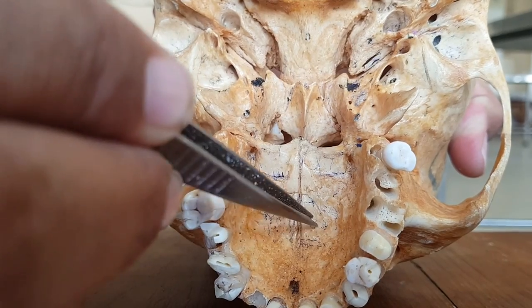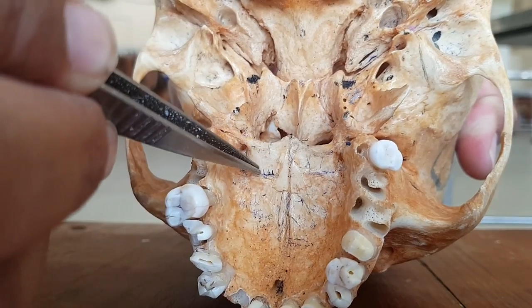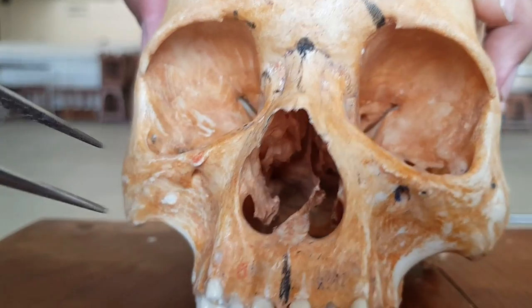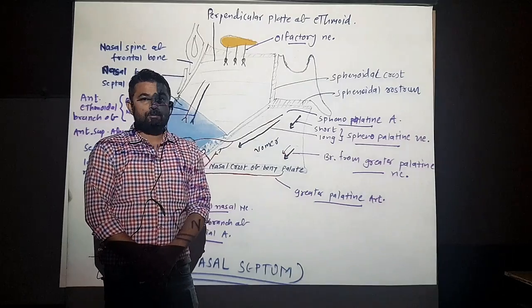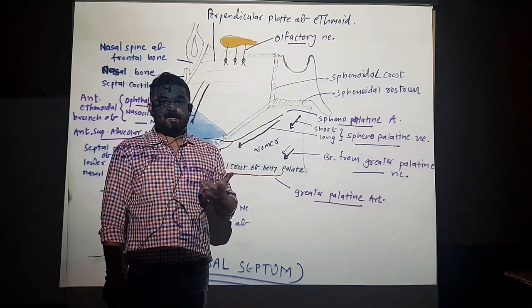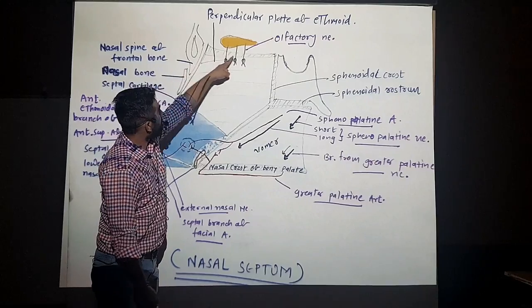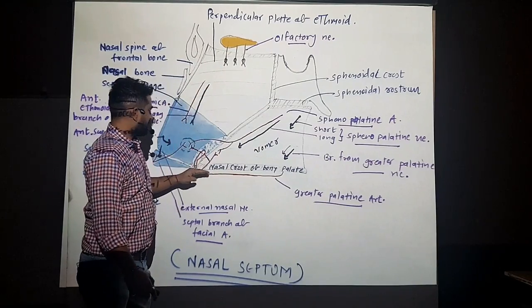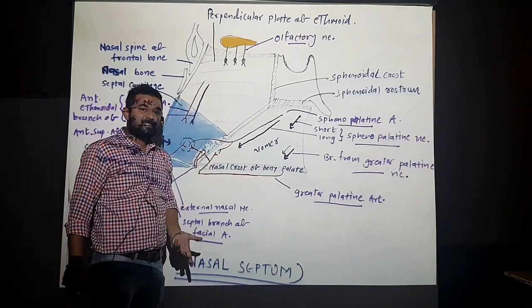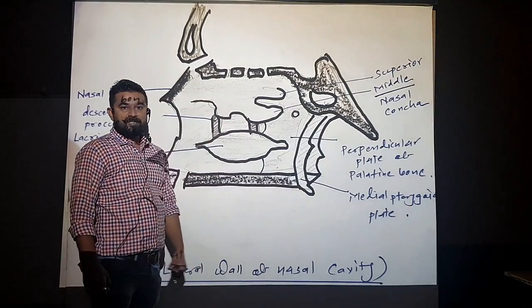The floor is formed by the hard palate, which is formed by the palatine process of the maxilla and the horizontal plate of the palatine bones. The nasal cavity has a roof, floor, lateral wall, and medial wall. The medial wall is also known as the nasal septum, and this is the lateral wall of the nasal cavity.